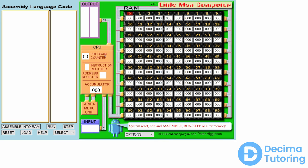The CPU has a connection to an input field here. The input field allows the user to type in values, and likewise there is an output field also connected to the CPU which allows for any output the CPU needs to show.